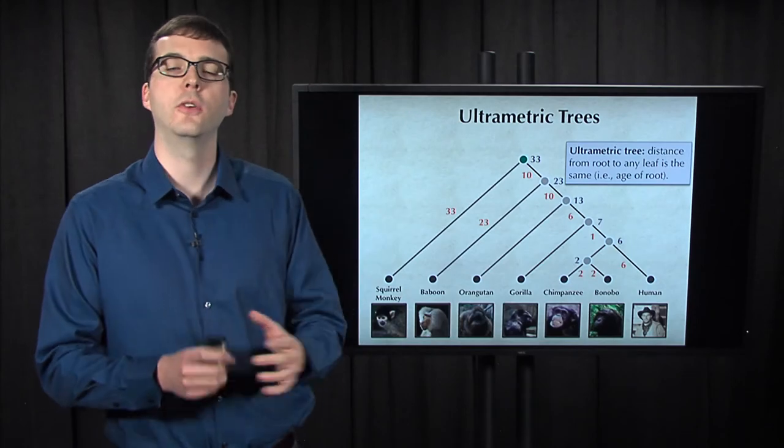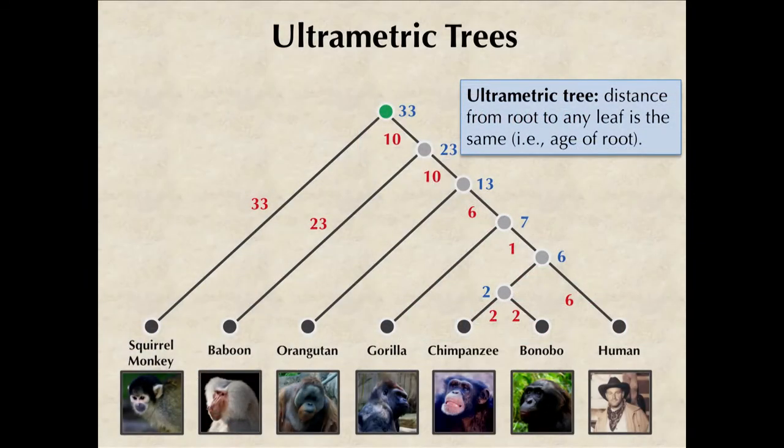Furthermore, if we assign ages to the nodes of the tree, then it automatically implies that the tree is what's called ultrametric, meaning that the length of every path from the root to a leaf is the same. So here the age of the root is 33 million years, and the length of any path from the root to a leaf node is 33.